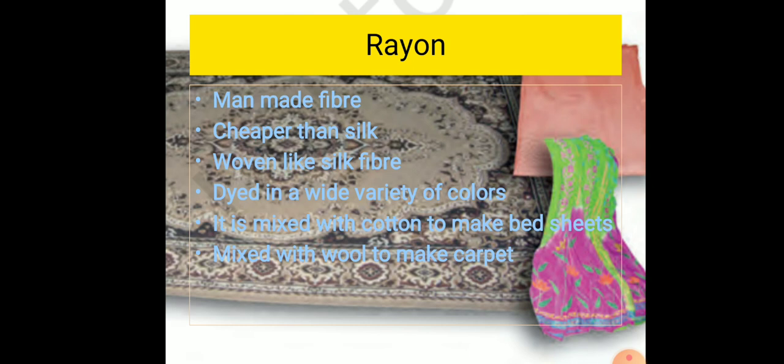Let us start with rayon. You have already learned in class 7 that silk fiber is obtained from the silkworm and was discovered in China. It was kept as a closely guarded secret for a long time. Fabrics obtained from silk fiber were very costly, but its beautiful texture fascinated everybody. Attempts were made to make silk artificially.